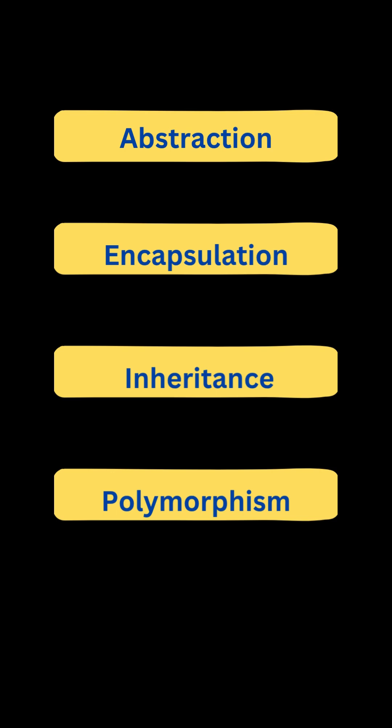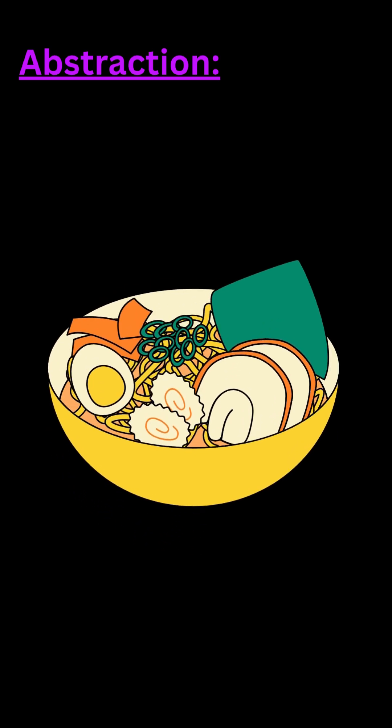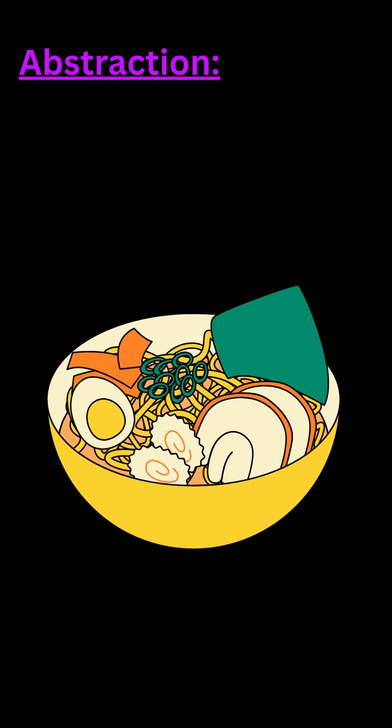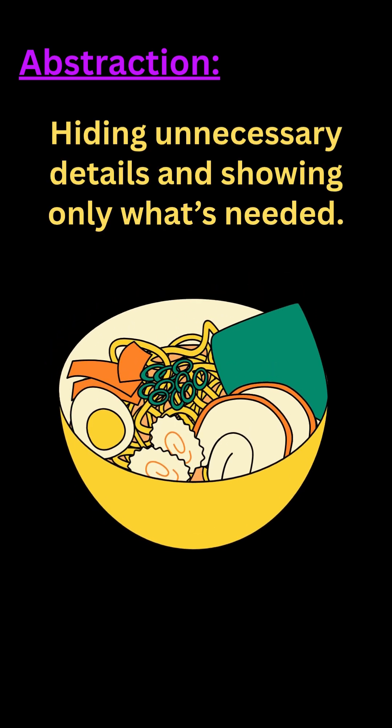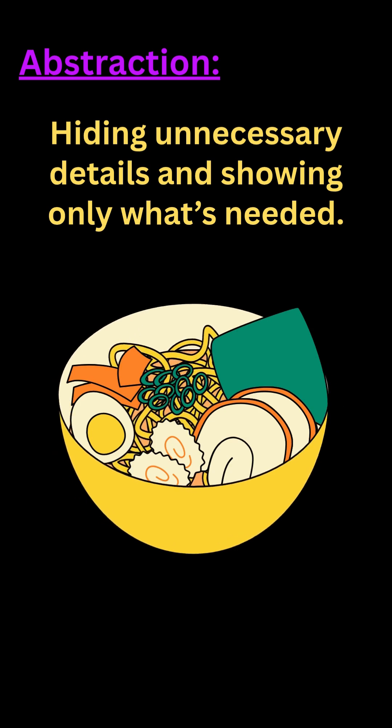Maggi — what simple thing is prepared, you can expect it. Generally, we buy a Maggi packet, cook it, and use it. But if you think about how the noodles or masala are prepared, those are unnecessary details which are hidden. So, hiding unnecessary details and showing only what is needed is called Abstraction.